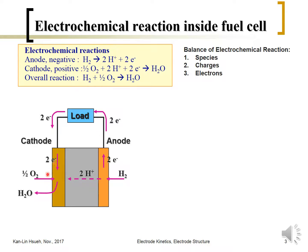At the cathode, the reaction also requires the same situation: the oxygen has to diffuse through the gas phase, the electron has to be conducted through the solid phase into the cathode, and the proton has to migrate through the liquid phase to generate water — which may be in liquid or vapor phase depending on the situation. So the electrode itself has to be a porous material with three phases — gas, liquid, and solid — coexisting.